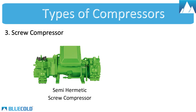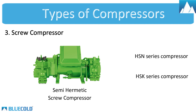Semi-hermetic Screw Compressors — these are for high-capacity cold rooms, cold storage, blast freezers, blast chillers, and industrial chiller systems. There are two types: HSN Series, for negative temperature usually below minus 20 degrees Celsius; and HSK Series, for positive temperature usually above 0 degrees Celsius.